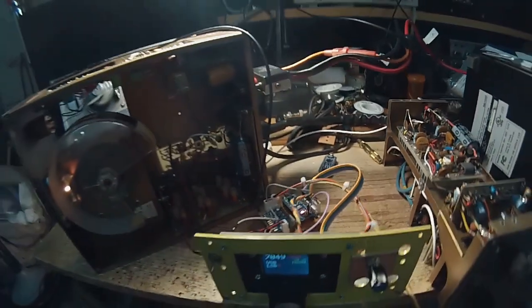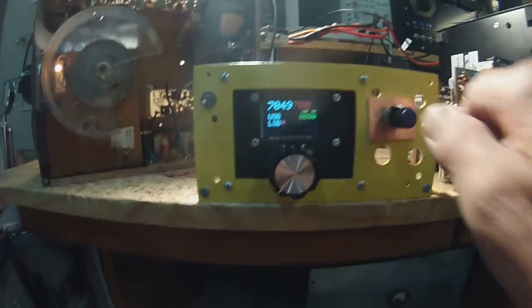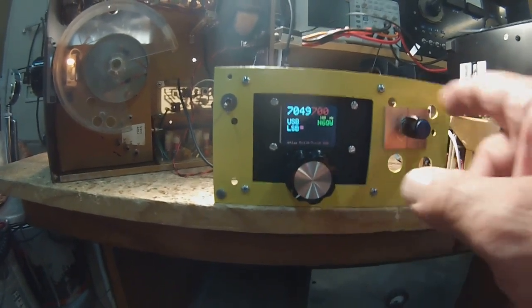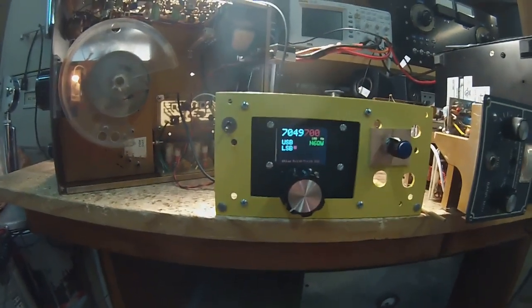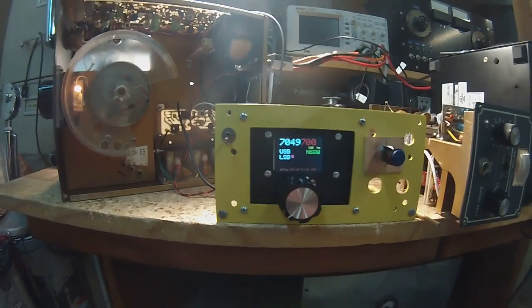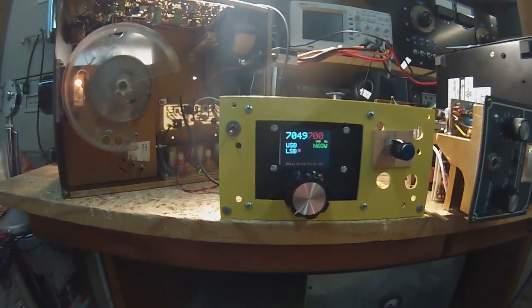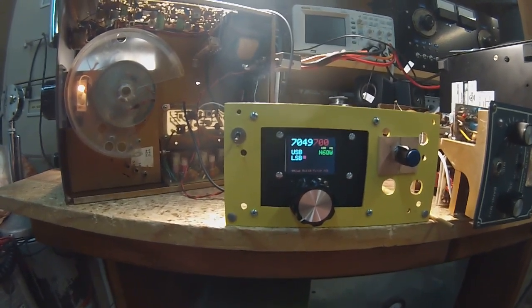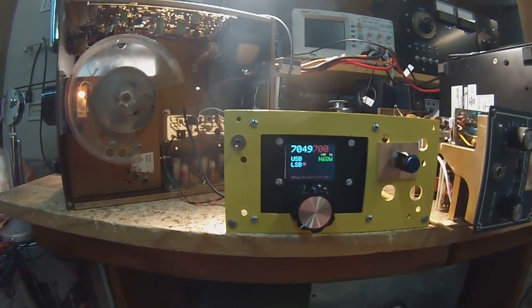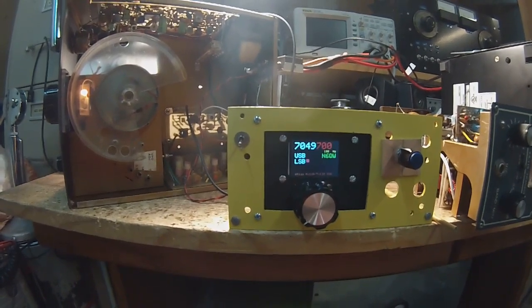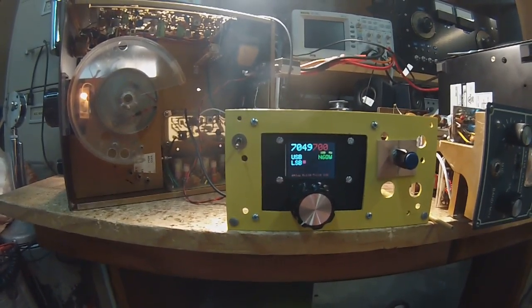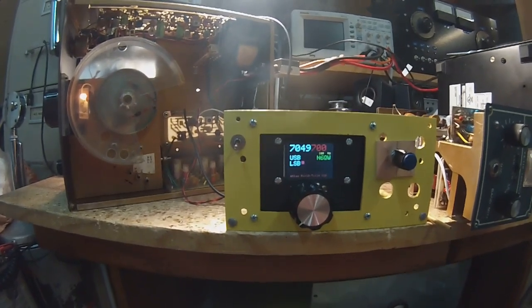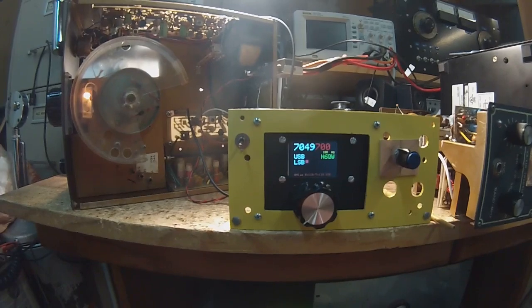It's band switched, so you can - this is 40, 80, 20, 15, and 10 - and as you switch the bands it puts in a default frequency. So like on 75 meters it's 3.8, 40 is 7.2, 20 is 14.2, 15 is 21.3, and on 10 it's 28.350. Didn't hear much on 15 this afternoon but I did hear some stations on 20.